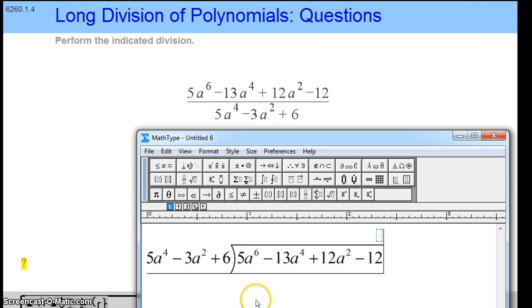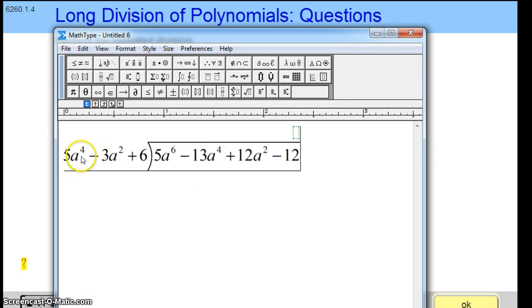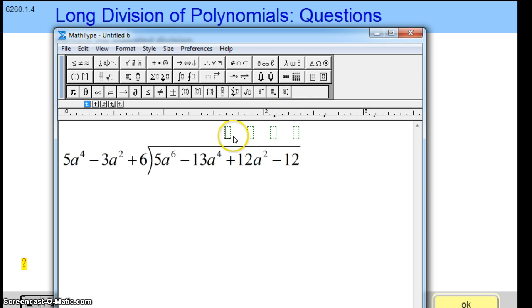The first step, always the first step, is we ask: what do I have to multiply this number by, 5a to the fourth, to get exactly this number? Well, you need to multiply by a squared. 5a to the fourth times a squared is 5a to the sixth. So let's make some columns up here. We typically put it right above, and we put a squared here.